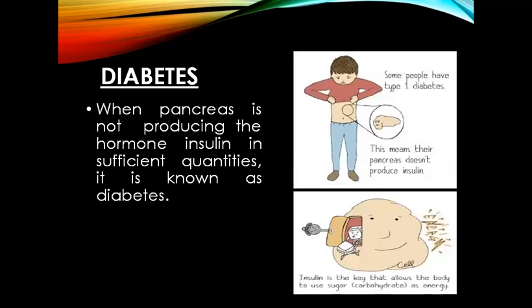The next disorder is diabetes. When the pancreas is not producing the hormone insulin in sufficient quantities, it causes diabetes. Insulin is a very important hormone in our body because it allows our body to use sugar or carbohydrates as an energy source. When this hormone is not produced in sufficient quantities, our body will not be able to use carbohydrates as an energy source, resulting in diabetes.